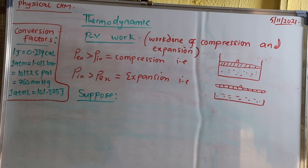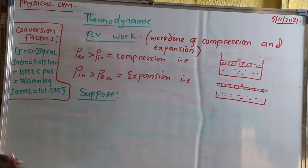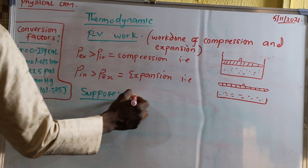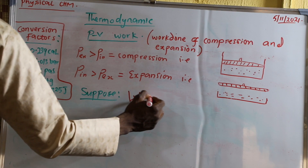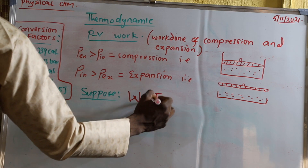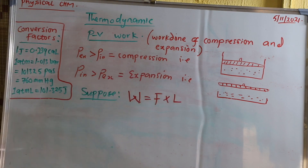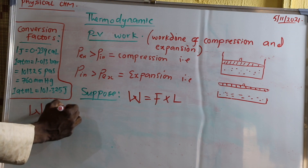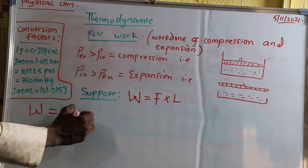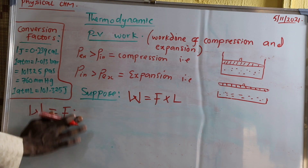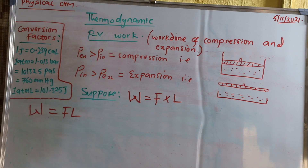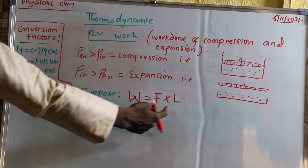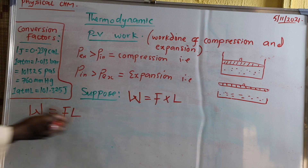Now for the derivation of PV work. Work is equal to force times distance. We know pressure is equal to force over area. By making force the subject of the formula, force will be equal to pressure times area. Substituting this into the work equation: work equals pressure times area times distance, which is P·A·L.